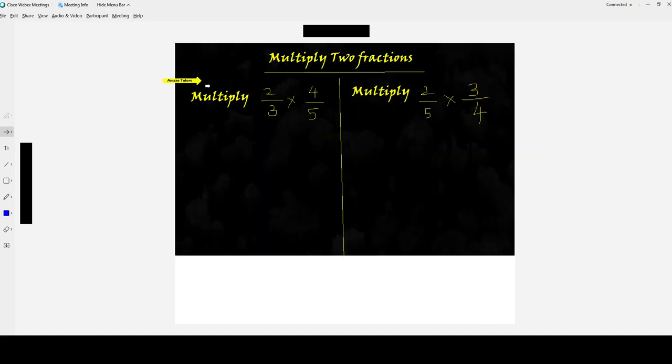Let's look at some more examples. We are going to practice some questions. Multiply 2 by 3 times 4 by 5. Step 1, multiply the numerators. Write them together. Multiply the denominators. Now 2 fours are 8, 3 fives are 15. 8 by 15. Can you see any common factor between 8 and 15? No, there is no common factor other than 1. That means it is already in the simplest form. This is the final answer.